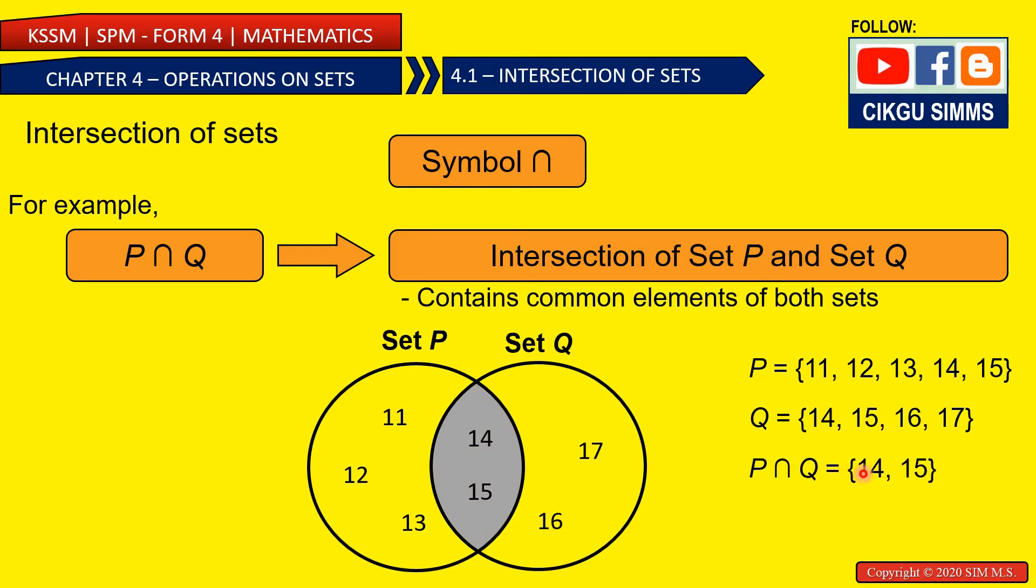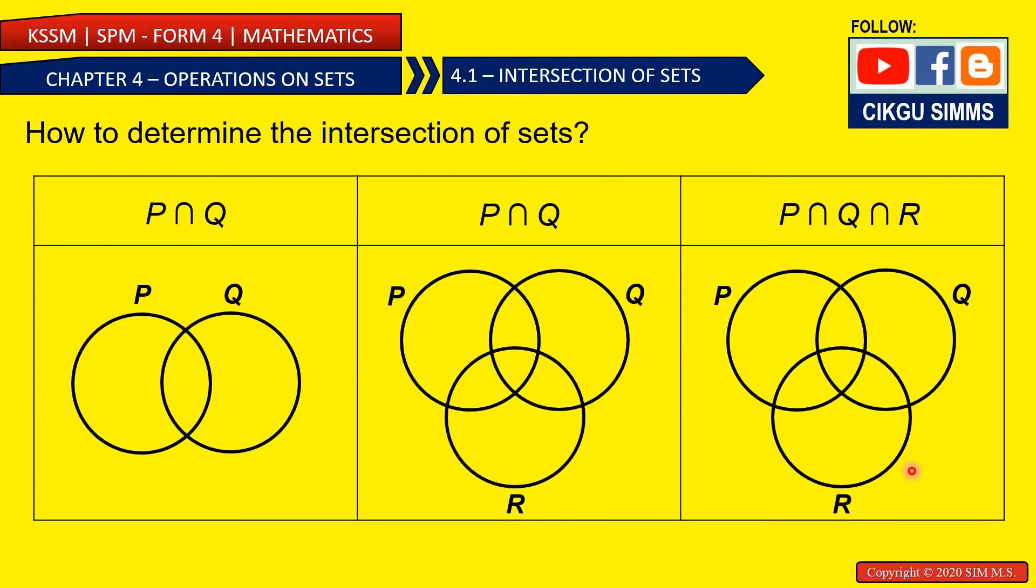P and Q is 14 and 15. So all the elements inside this section is the intersection, which are 14 and 15. So how to determine the intersection of sets? Let us see different examples, and we need to shape the intersection.